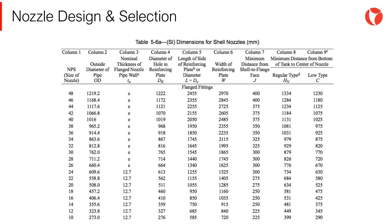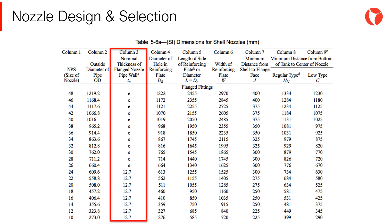Nozzle neck thicknesses will be obtained from table 5.6 of the standard, as shown in the picture. The selection process consists of obtaining the thickness from the table for a given diameter.